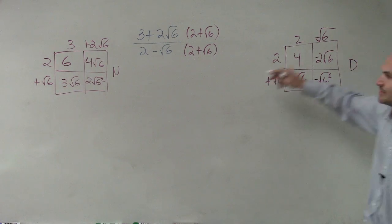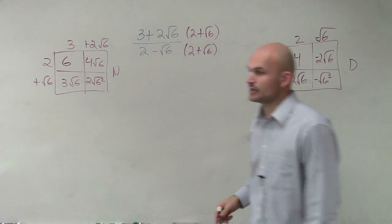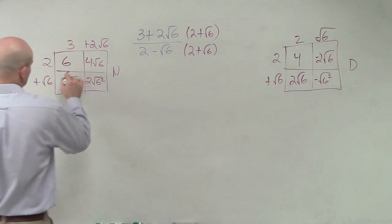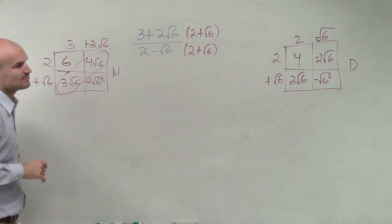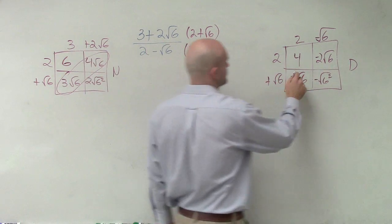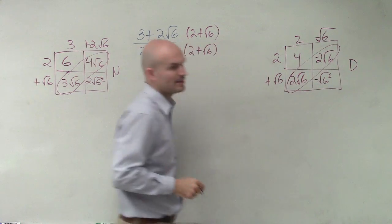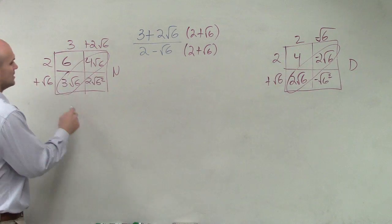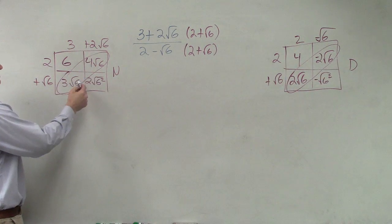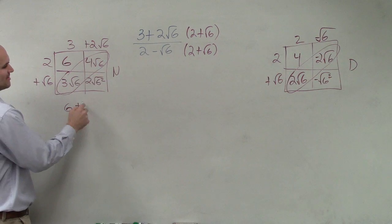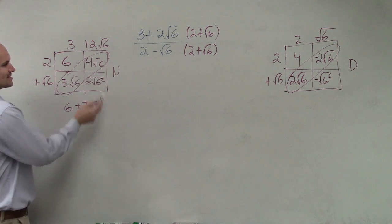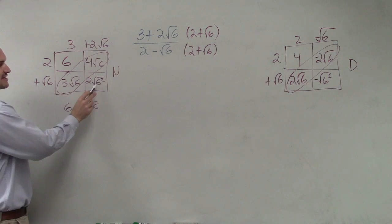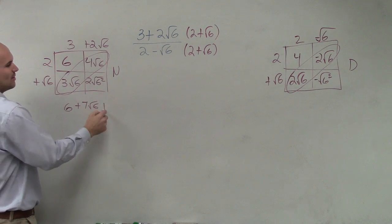Remember, this is your denominator and that's your numerator. Now let's write our answer. These two terms have the same radical, so we can combine them. I have 6, 3 radical 6 plus 4 radical 6 is 7 radical 6. Here, square root of 6 squared is just 6 times 2 is 12.